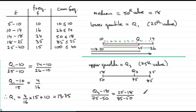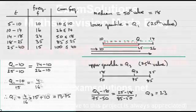So rearrange this for Q3, I'll leave that up to you to do, but you should find that you get Q3 equals 23.